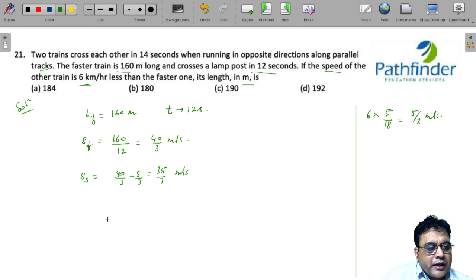Now, we know that the faster train crosses the slower train in 14 seconds. So, we have 160 plus the length of the slower train upon 40 by 3 plus 35 by 3, the relative speed between the faster and slower train. This must be equal to 14.